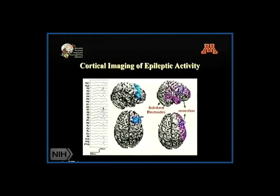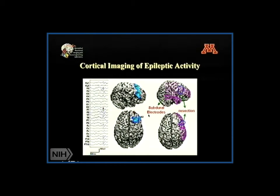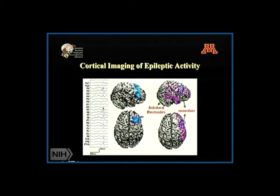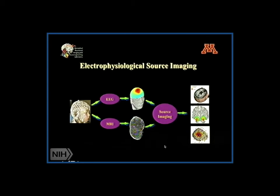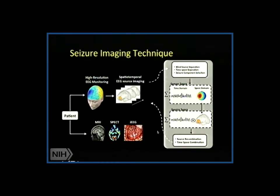We have applied this technology to a group of pediatric patients, because in pediatric patients epilepsy often comes from near the cortex, where ECOG is a very good way to localize where the seizure comes from. You can see the interictal spike, and here is our noninvasive imaging result shown in green and blue, alongside the implanted invasive electrodes showing the seizure onset zone — which shows a reasonable correspondence between invasive and noninvasive results. We have also tried adult patients where the seizure comes from a deeper portion.